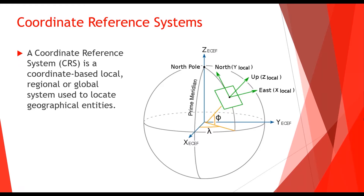As we can see here on screen, a coordinate reference system can be defined as a coordinate-based local or global system used to locate geographical entities. In essence, it provides a common ground for everything to come together — so how projects can come together within themselves but also position themselves relative to their environment.